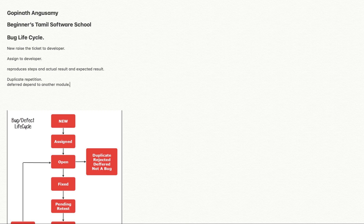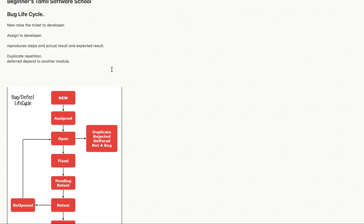Reject means you raised a bug, but it is an invalid bug. For example, if the input is invalid or a minus value, the developer will raise a rejection. So you will reject that step and the bug is considered invalid.